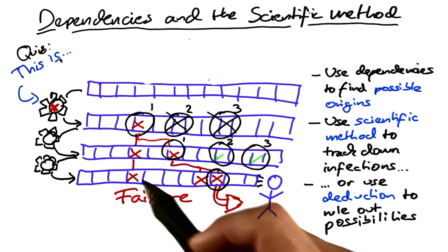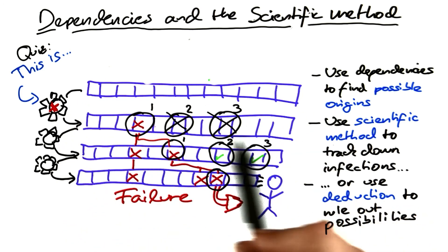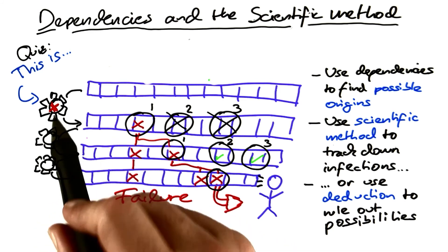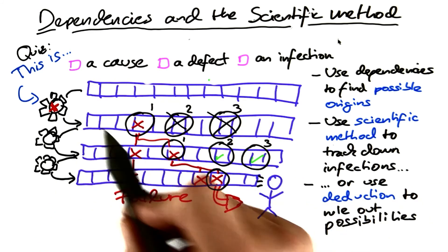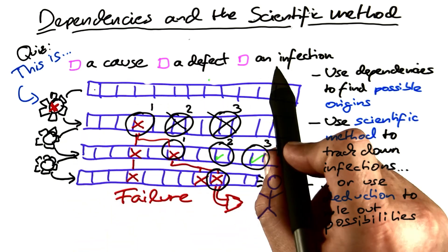So, how do we call a statement whose ingoing state is all correct, but its outgoing state is infected? What is this? Is this a cause, a defect, or an infection?